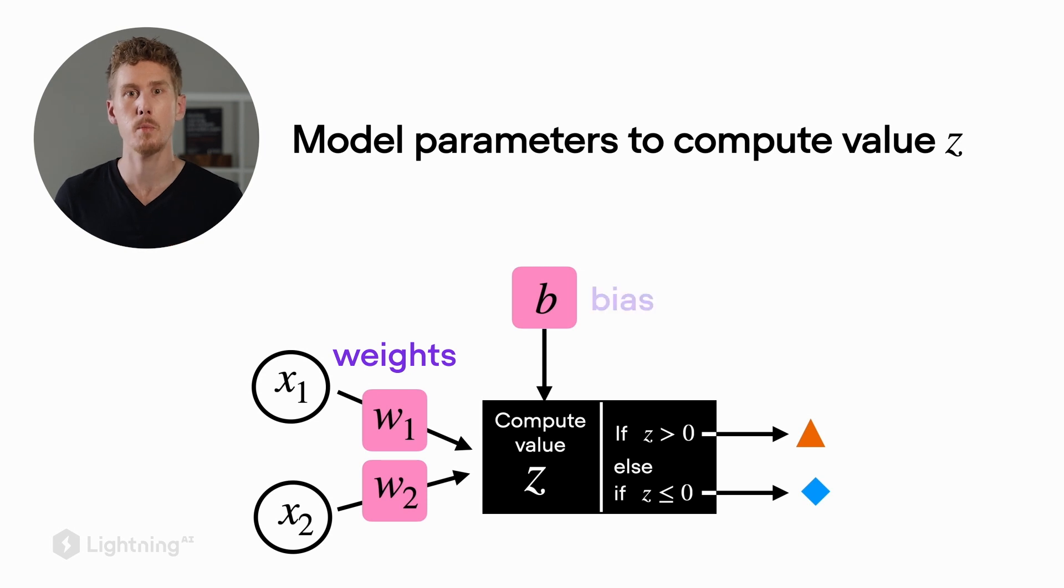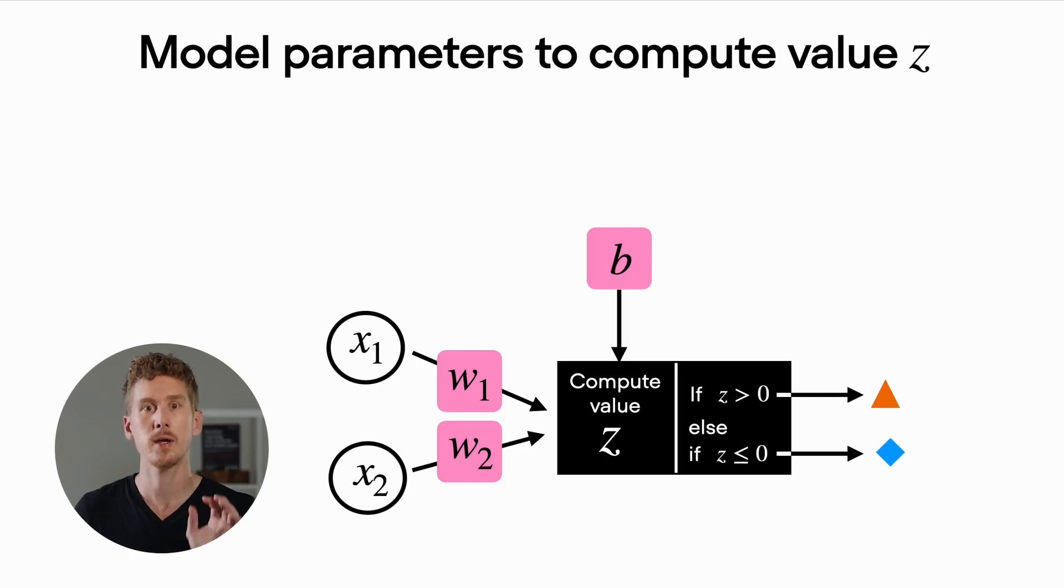b here refers to the bias unit. It's essentially a value that we add on when we compute the weighted input, the value z. The bias unit is something we will also encounter later when we work with deeper neural networks. So everything you see on this slide, you can think of it as a building block for building deeper neural networks later on in this course.